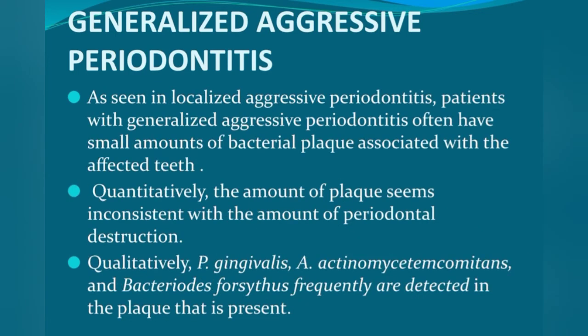As seen in LAP, patients with GAP often have a small amount of dental plaque associated with the affected teeth, which quantitatively seems inconsistent with the amount of periodontal destruction. Qualitatively, Porphyromonas gingivalis, Actinobacillus actinomycetemcomitans, and Bacteroides forsythus (now known as Tannerella forsythia) are frequently detected in the plaque that is present.